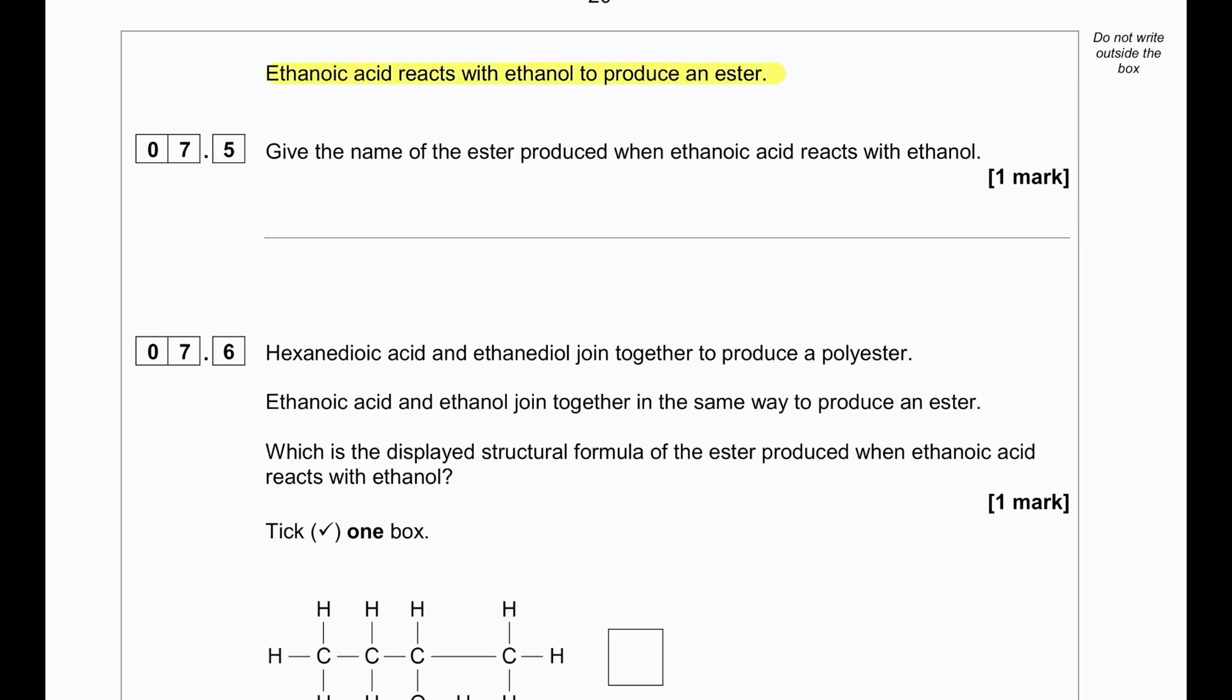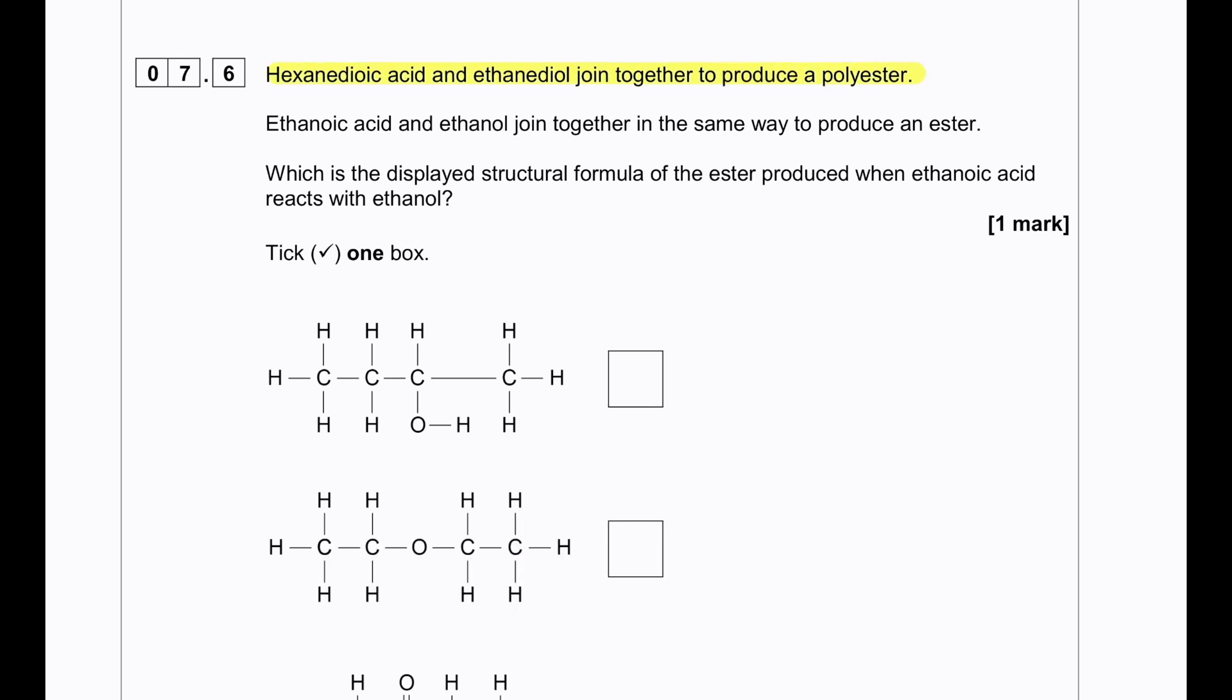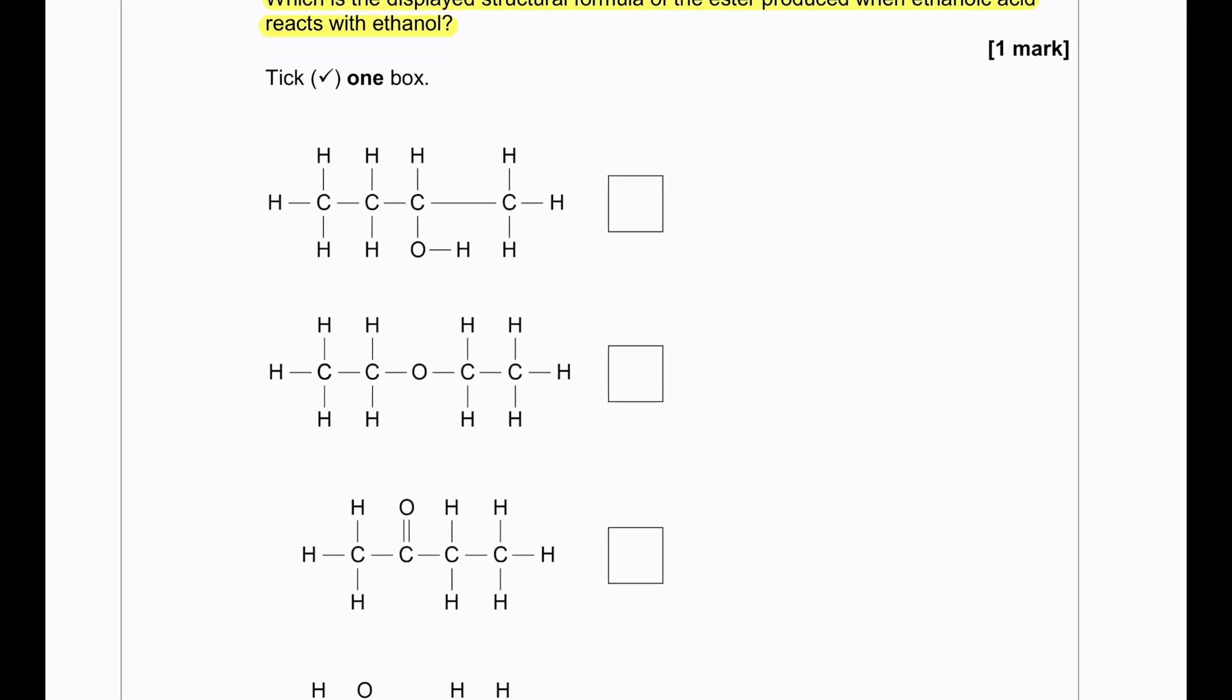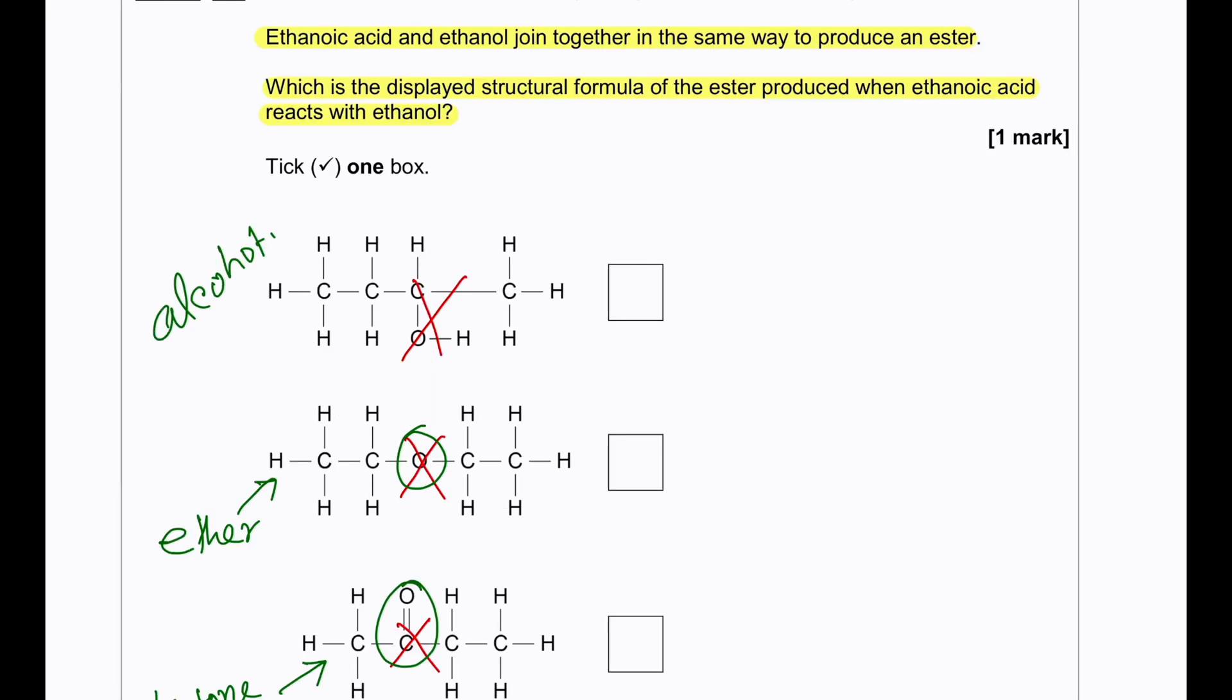Ethanoic acid reacts with ethanol to produce an ester. Give the name of the ester produced when ethanoic acid reacts with ethanol. To name an ester from the ethanol and the ethanoic acid that it is produced from, the ethanol will give the first part of the name which is ethyl and the second part of the name will come from the acid which is ethanoate. What is the displayed structural formula of the ester produced when ethanoic acid reacts with ethanol? First of all it's going to be an ester. So this is not an ester, neither this is an ester, neither this is an ester. So only this is an ester, ethyl ethanoate. This one is a ketone because of the C=O double bond. This one is an ether because of the C-O-C bond. And this one is an alcohol because of the OH bond.